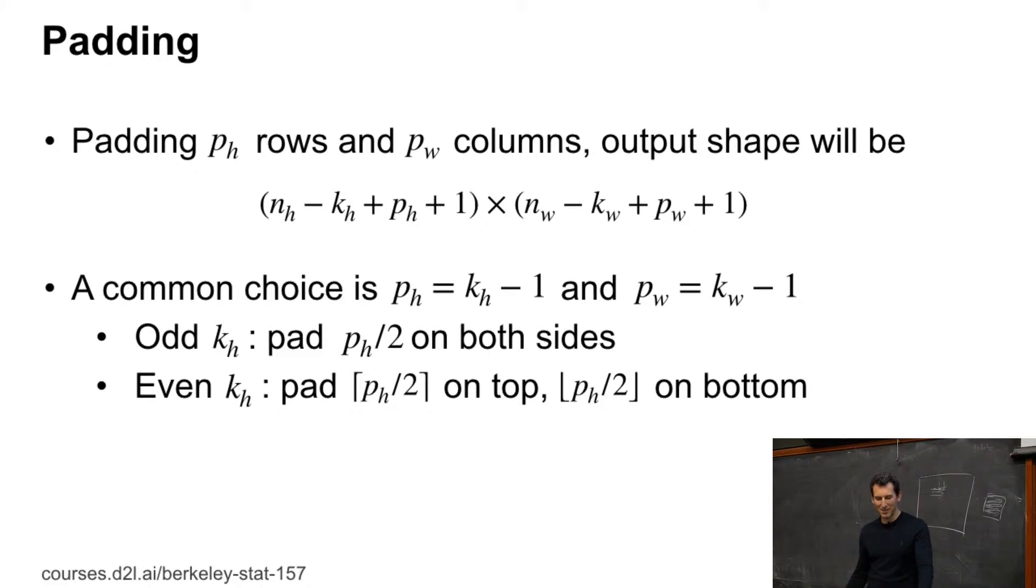So a couple of common things is you take square kernels and then you take odd numbers.